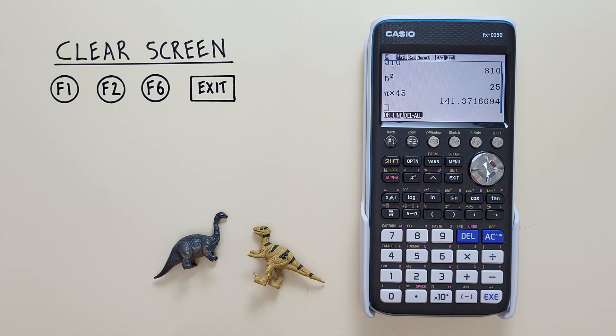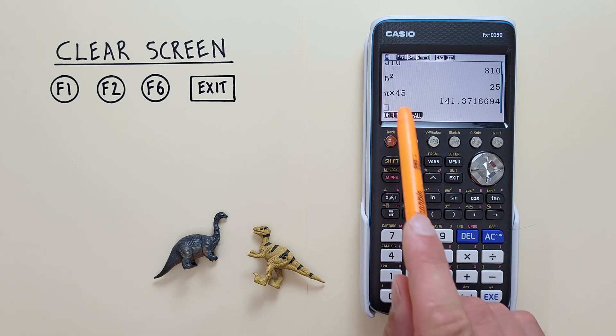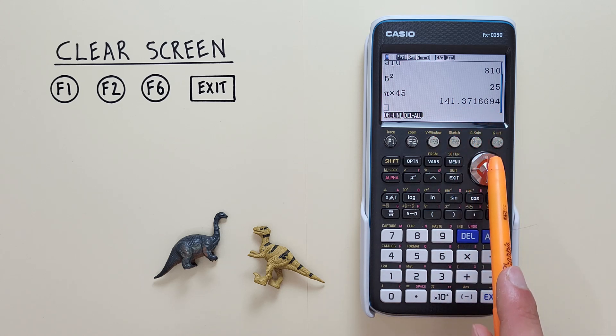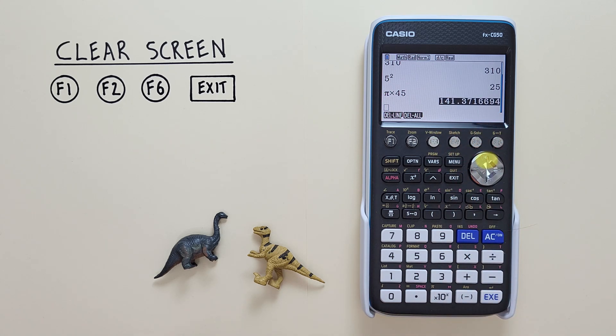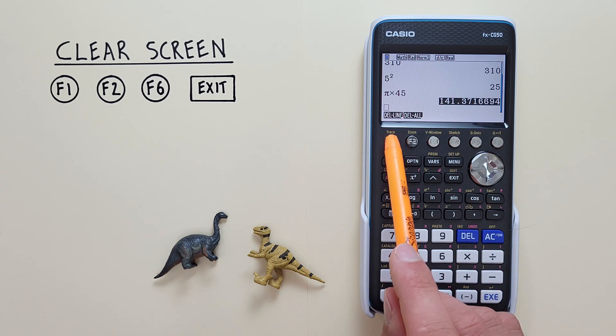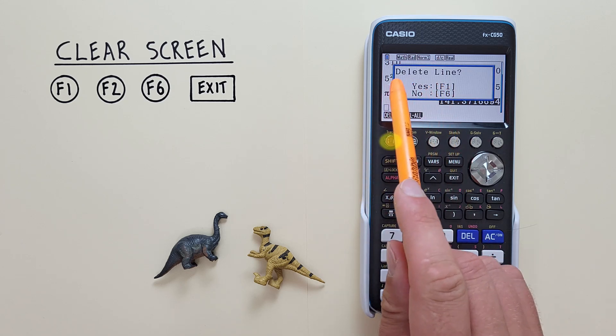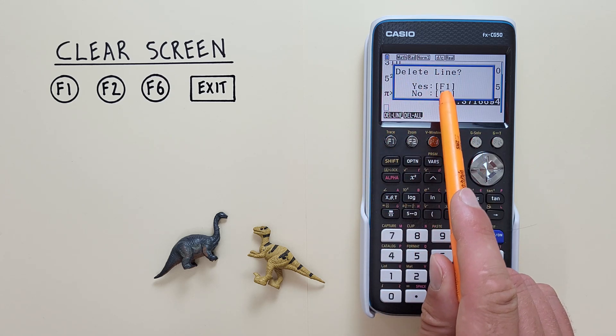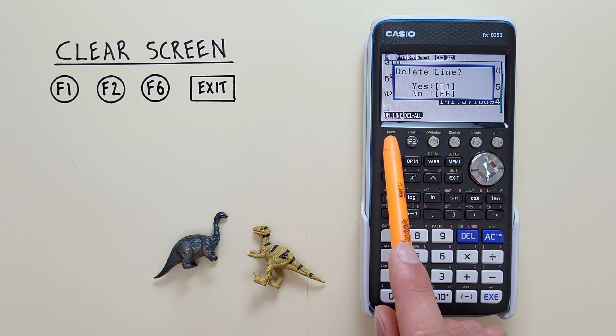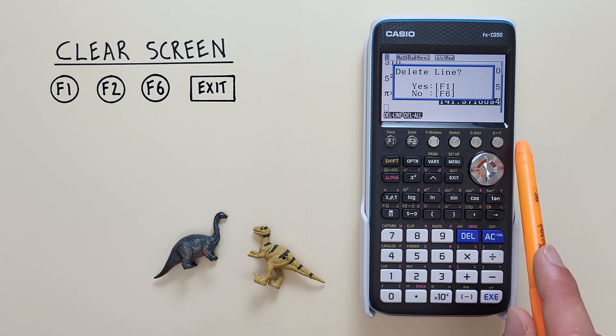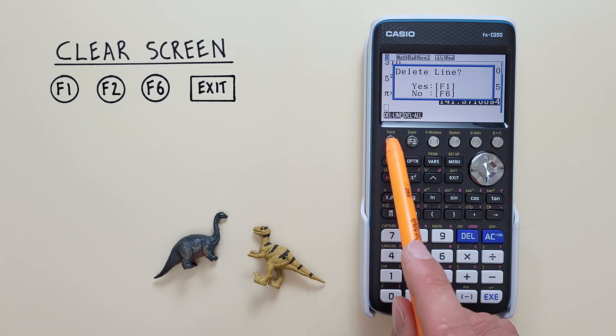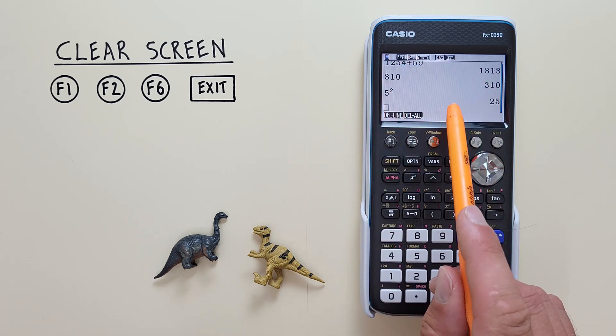If we just want to delete one line, like for example this pi times 45 equals 144 line, we can scroll to it and choose F1 delete line. That'll bring up a pop-up asking us to confirm. We can use F1 to say yes, or if we made a mistake, F6 to go back. If we want to delete it, we hit F1, and that line has now been deleted.